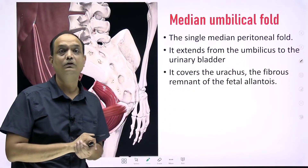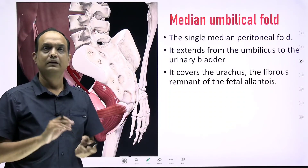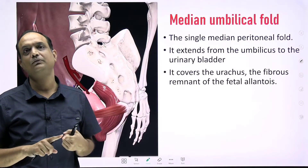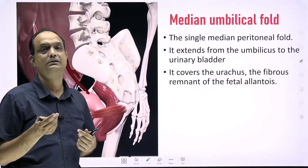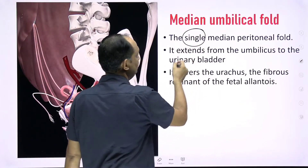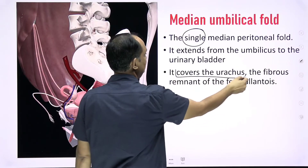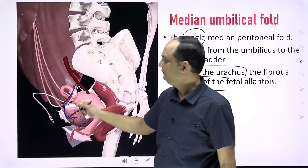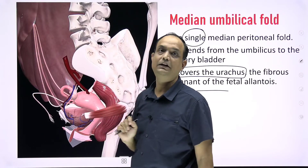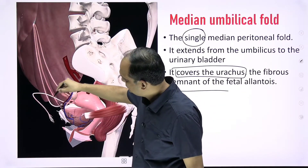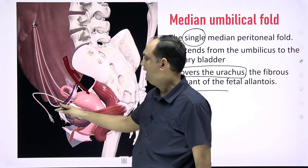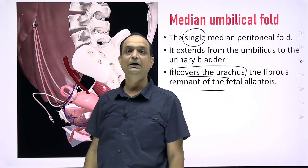Now, regarding the false ligaments: the first is the median umbilical fold. There is an important distinction — when talking about the urachus itself, it is a ligament; but when talking about the peritoneum covering the urachus, it is the false support, known as the median umbilical fold. It is a peritoneal fold, a single unpaired fold, which covers the urachus. This fold connects from the apex of the bladder to the umbilical area and is formed by the peritoneum lying over the structures on the anterior abdominal wall.